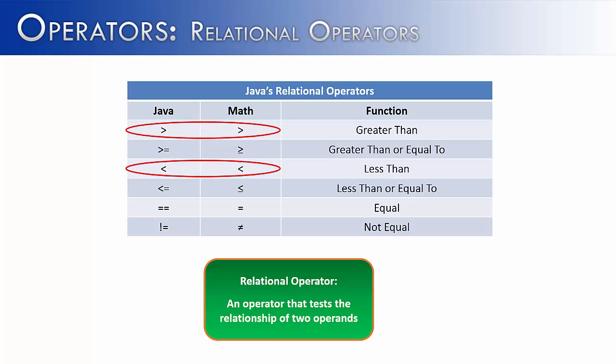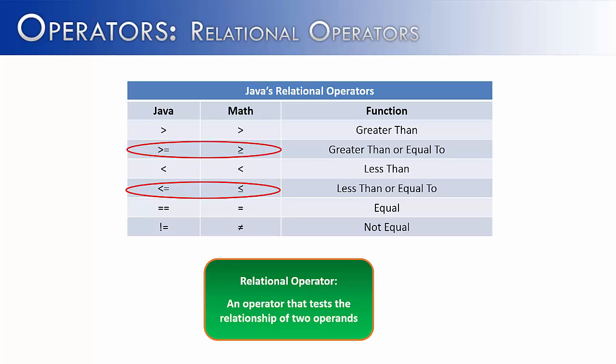Now some of the relational operators are coded exactly the same way they would be written in math, the greater than and the less than. But all the other relational operators, there are slight variations. You can see the greater than or equal to, or less than or equal to.